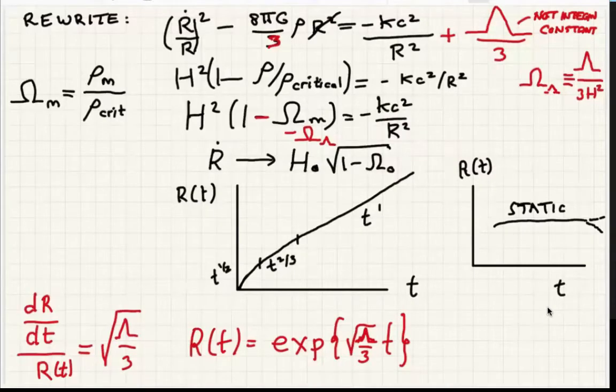This is the energy equation for the universe. We had a kinetic energy term, a gravitational potential energy term, and a total energy term which turns out to be related to the curvature of the universe.